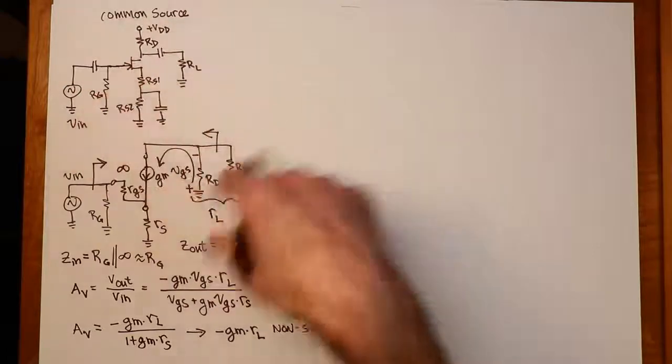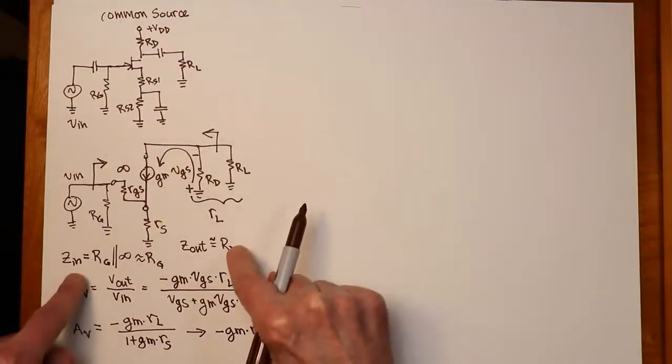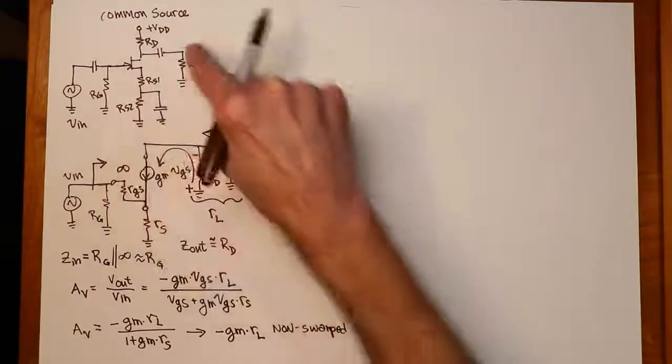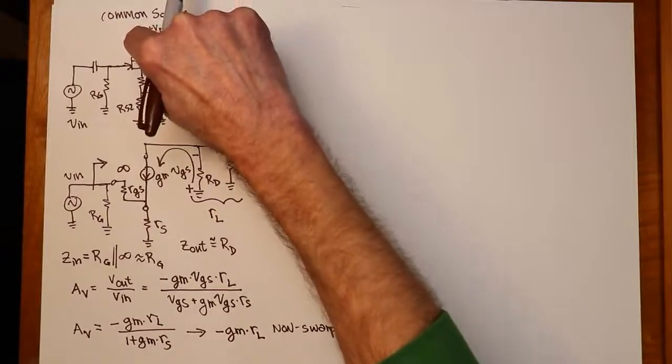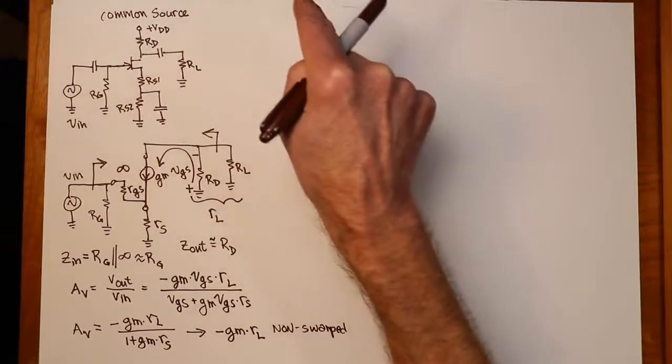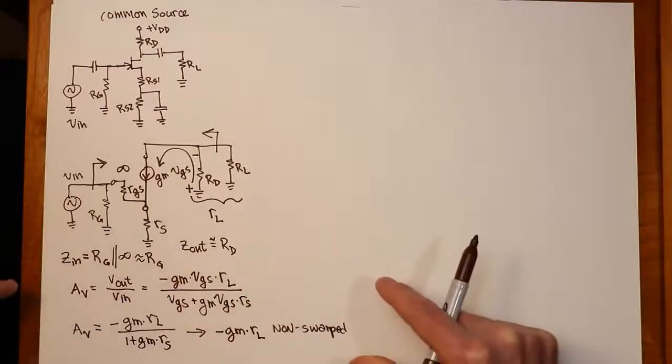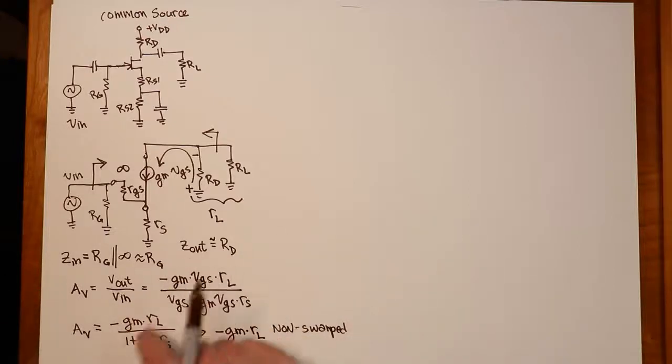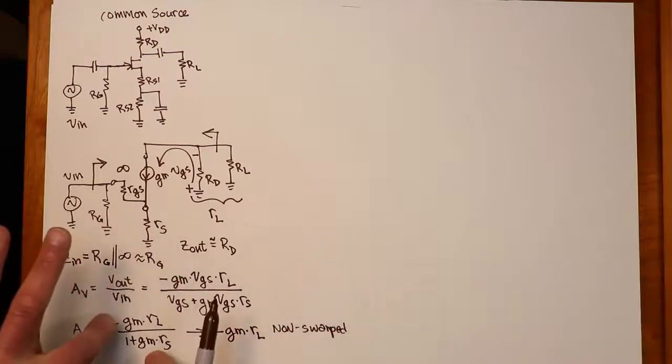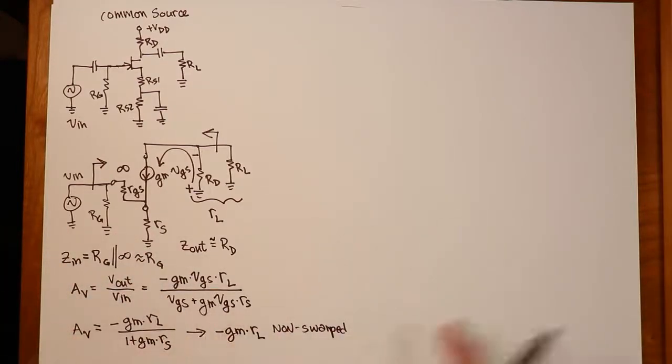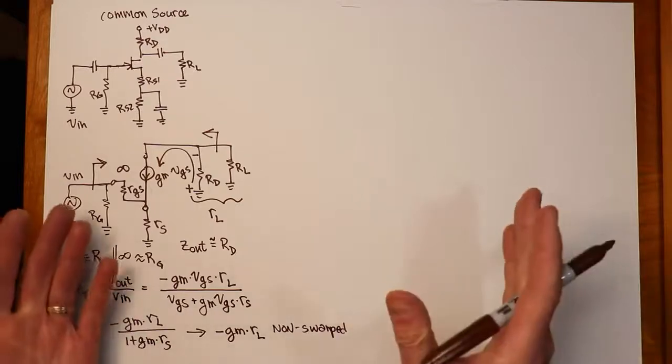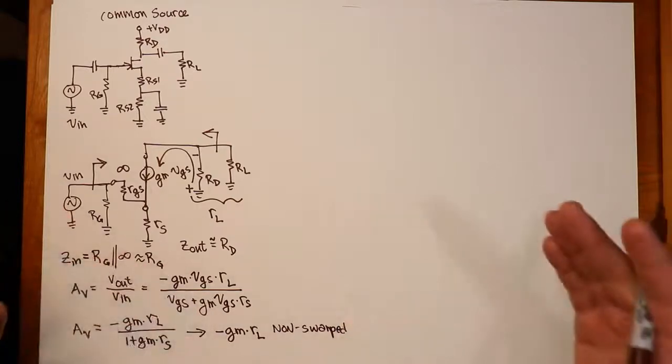So two of these things you can get just by inspection. You look at the circuit and say, hey, there's my RD. That's my ZOUT. Here's my RG. That's my ZIN. And we go through this little computation over here. We have to find GM, just kind of like we found R prime E in a bipolar. We have to find the GM for this, plug it in the formula, and off we go. So this would be a good place to actually do a proper example.